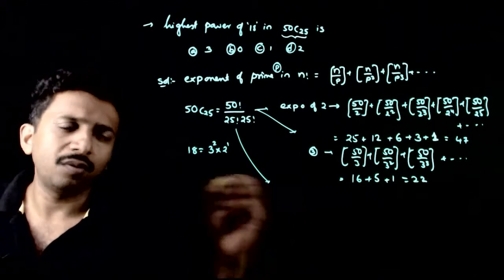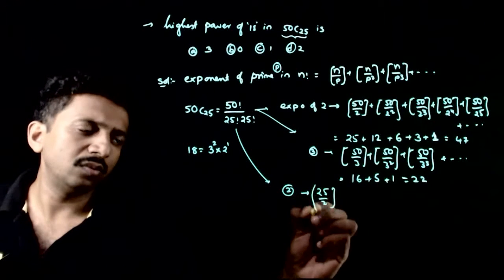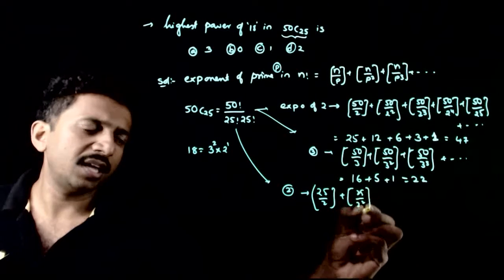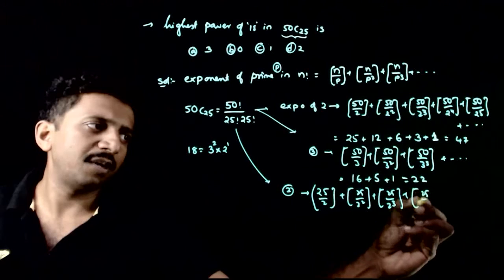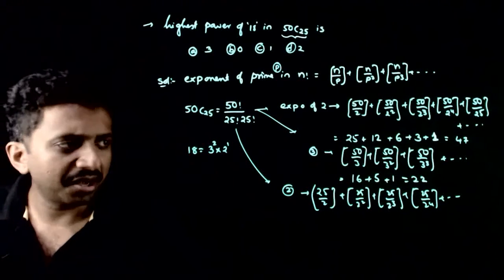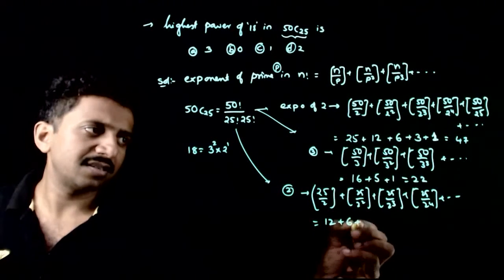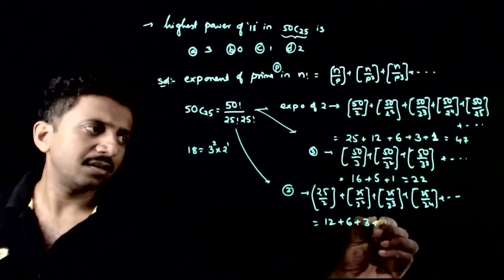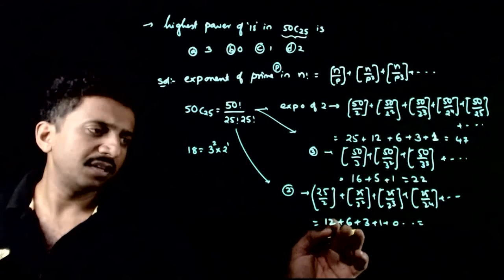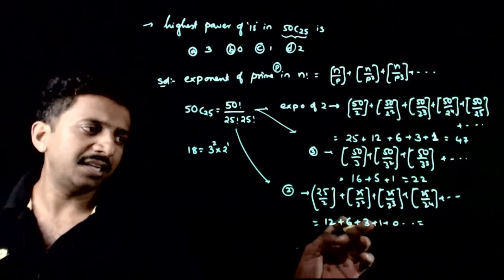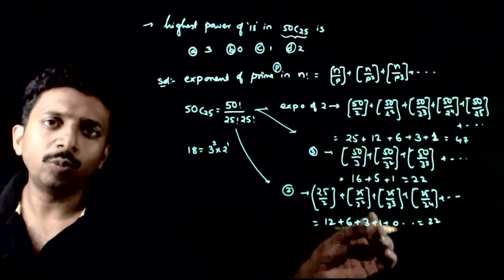Now for 25!: what is the exponent of 2? floor(25/2) + floor(25/4) + floor(25/8) + floor(25/16) + ... = 12 + 6 + 3 + 1 + 0 + ... = 22. So in 25! you have 2^22.